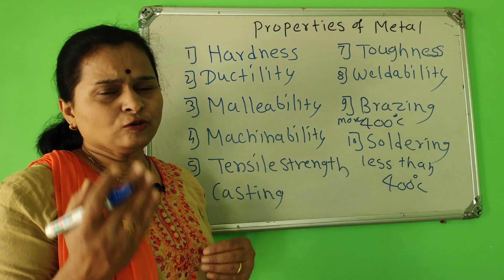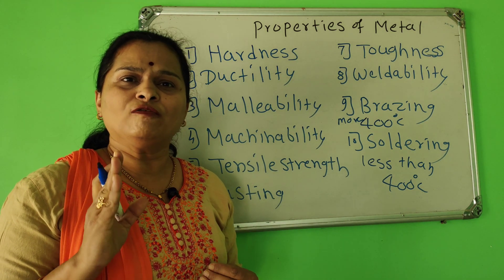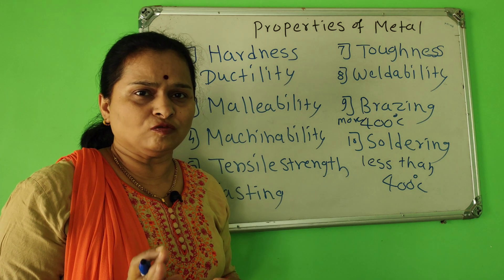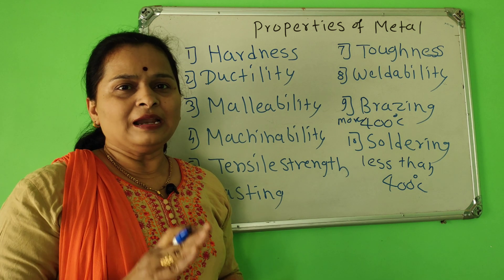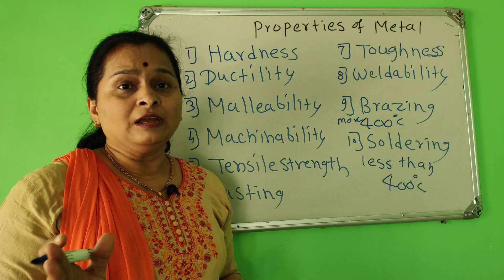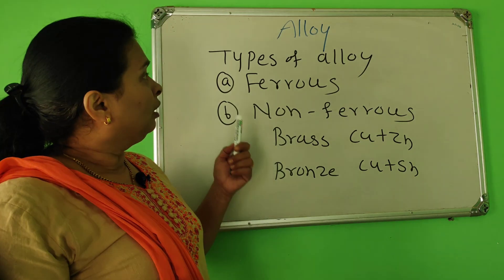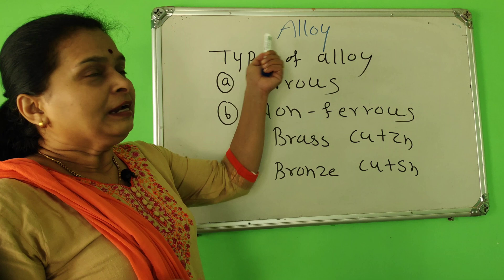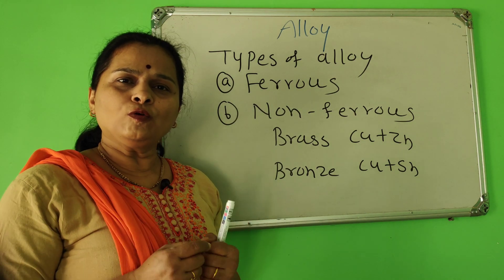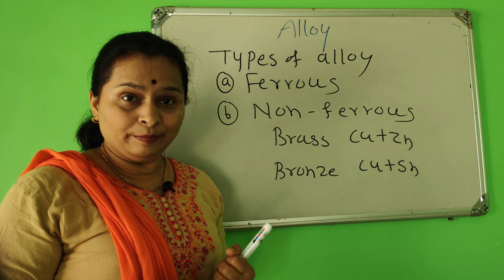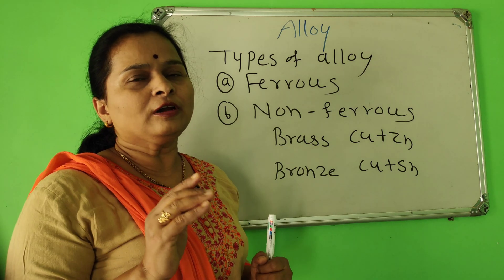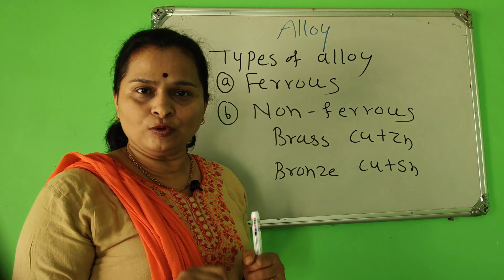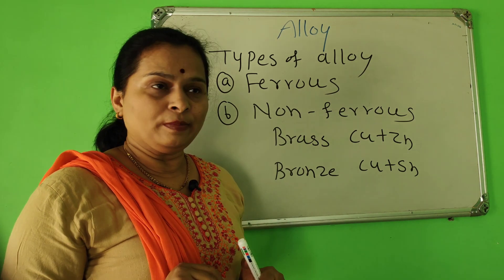Now the first part of this chapter — metal — is over. The second part is alloy, then cement and refractory. An alloy is a homogeneous mixture of two or more elements, one of which must be a metal. That means an alloy contains at least one metal and other non-metal.